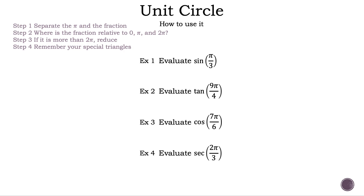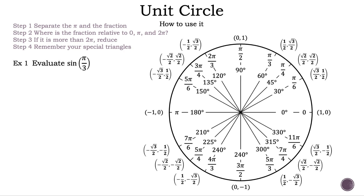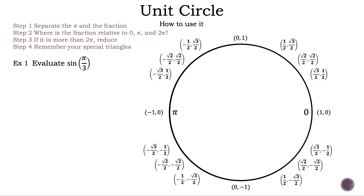Let's use this to answer some examples. The steps are: Step 1, separate the pi and the fraction. Step 2, place the fraction relative to 0, pi, and 2 pi. Step 3, if it's more than 2 pi, reduce. Step 4, remember your special triangles. We could use a unit circle as-is, but most likely you won't have it, so let's leave just the points for reference.